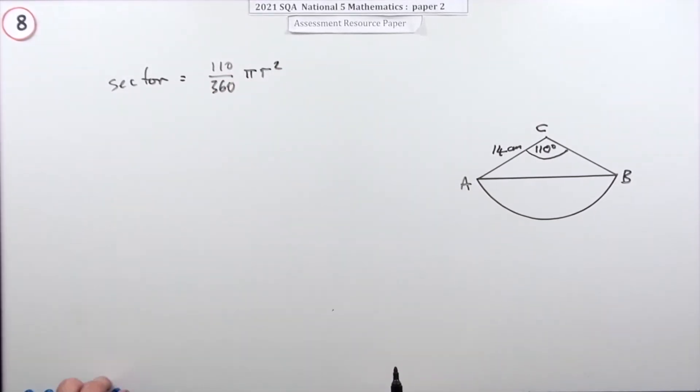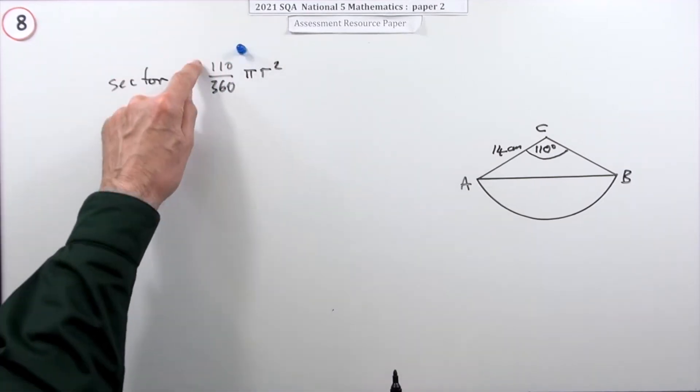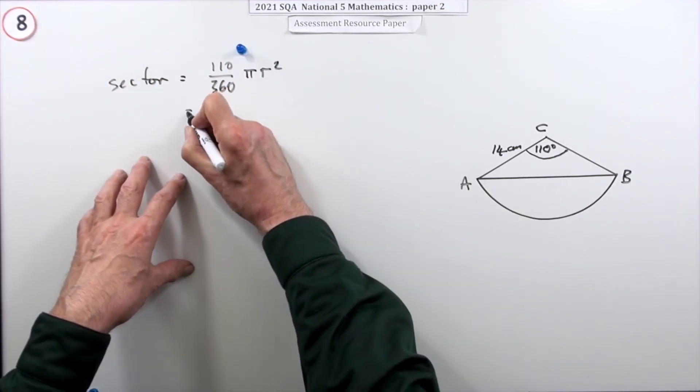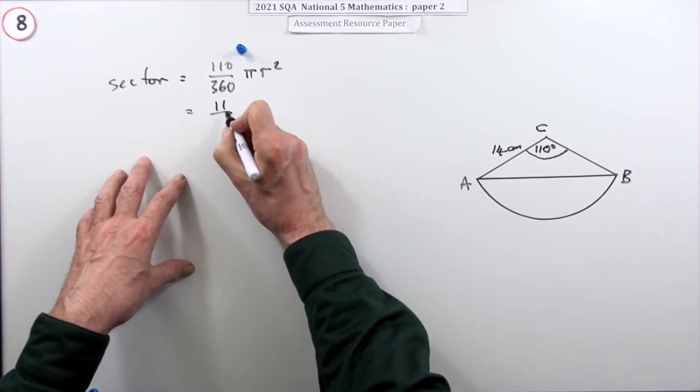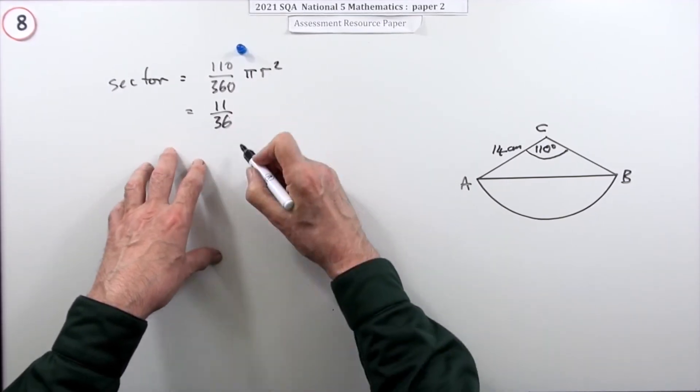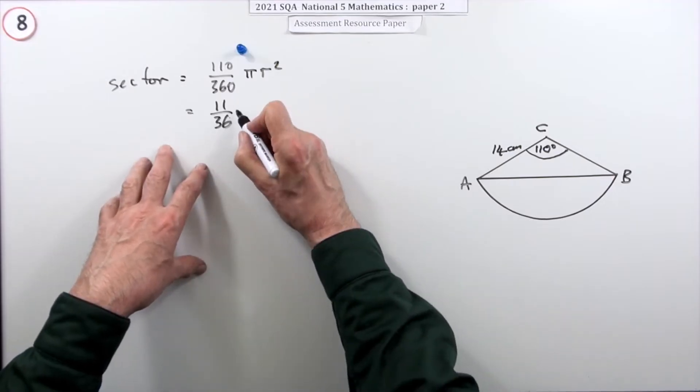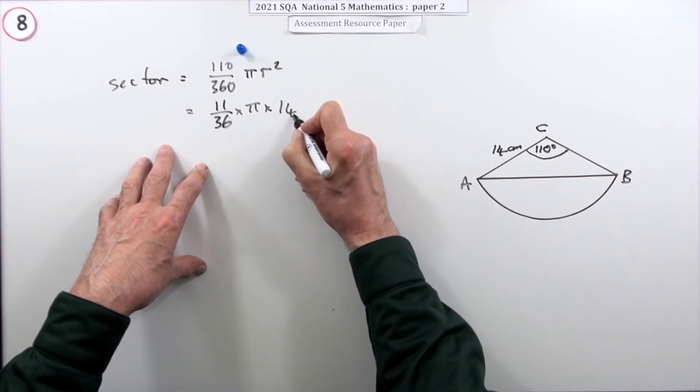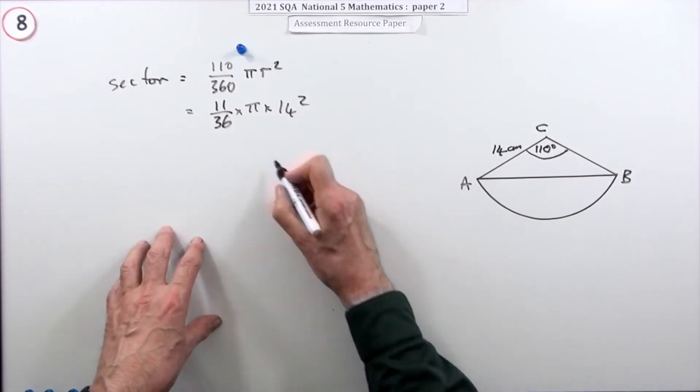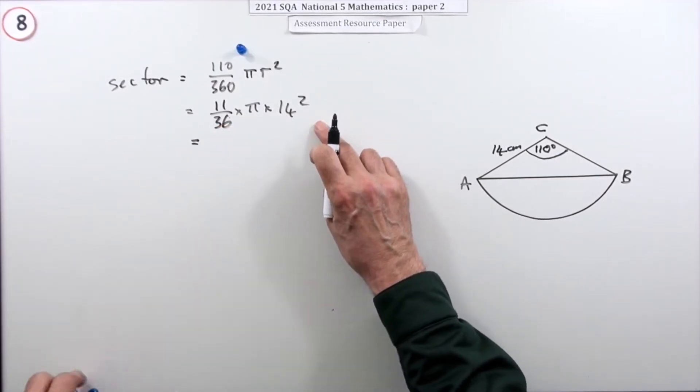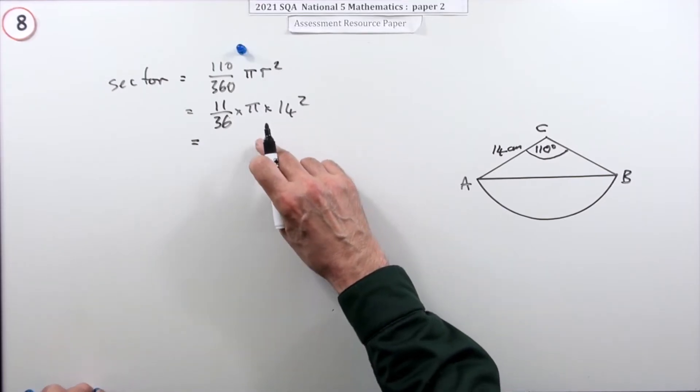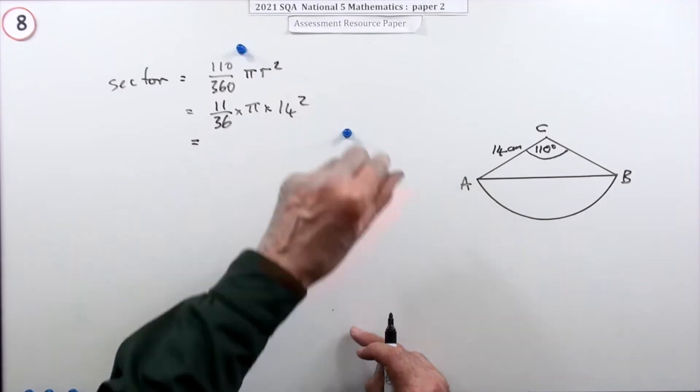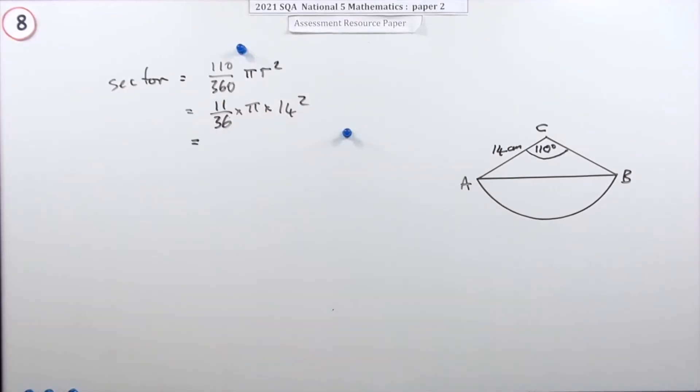Getting that fraction is worth a mark. Now put in the figures - that's 11 upon 36 times pi, and the radius is 14 times 14 squared. Substituting into the area formula is the next mark, and there's nothing specifically for the answer.